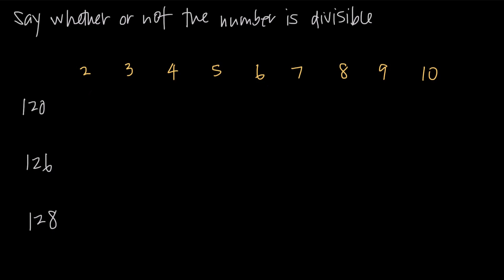In this video, we're talking about divisibility and some of the tricks that we use to say whether or not a number is divisible by 2, 3, 4, 5, 6, 7, 8, 9, or 10. There are a lot more divisibility rules than we're going to cover here, but these are the ones that you're going to use most commonly because you're going to be looking to see whether or not a number is divisible by some of these lower numbers.